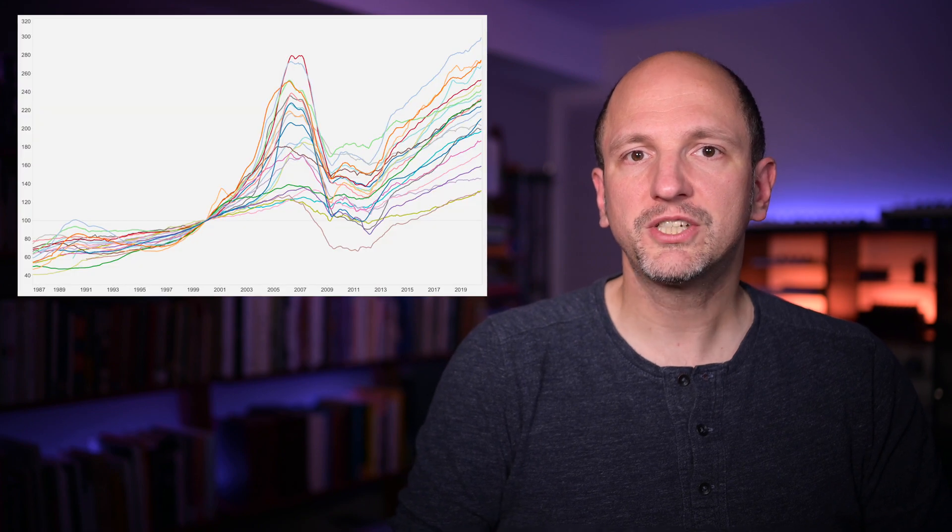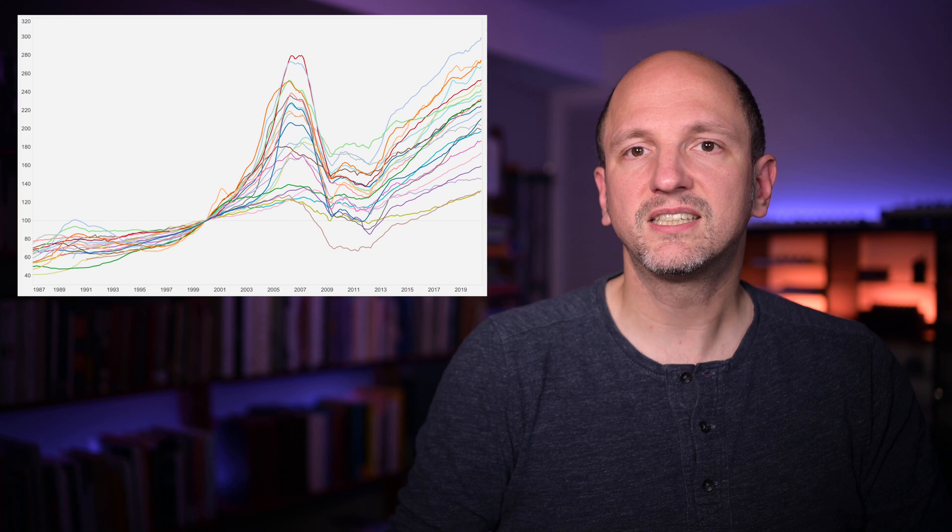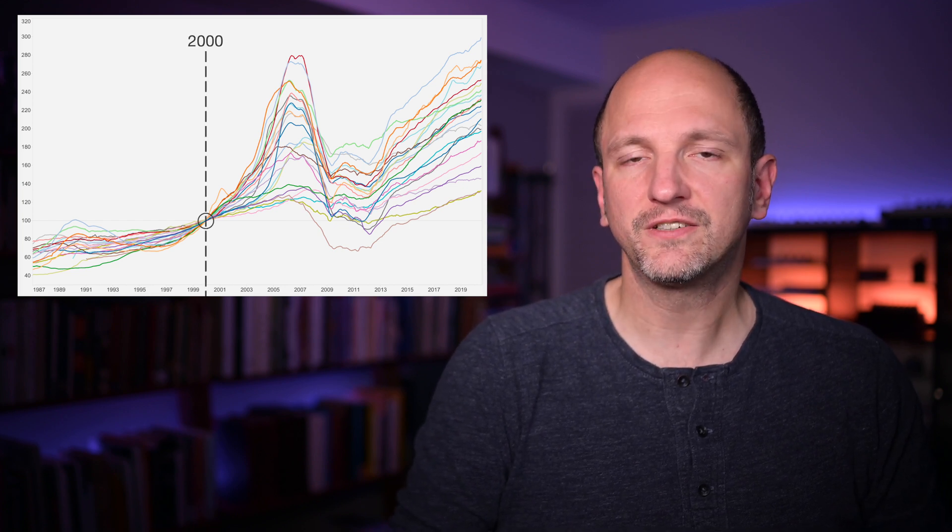If this reminds you of the Case-Shiller Home Price Index, you're not wrong. It's slightly different because it's based on listing prices rather than sales and it's not seasonally adjusted, but it's the same idea. The Case-Shiller Home Price Index measures housing prices in 20 cities across the United States. It's a dataset that is released as an index every month, and its index date is January 1st, 2000.